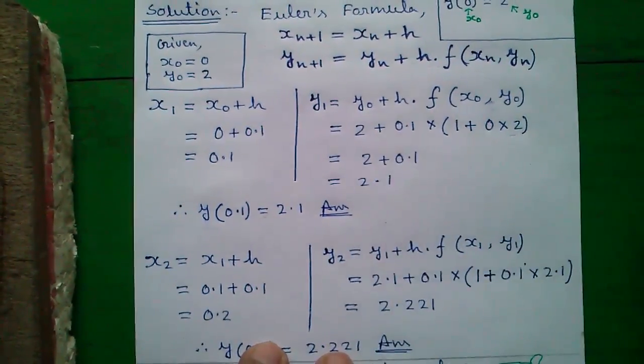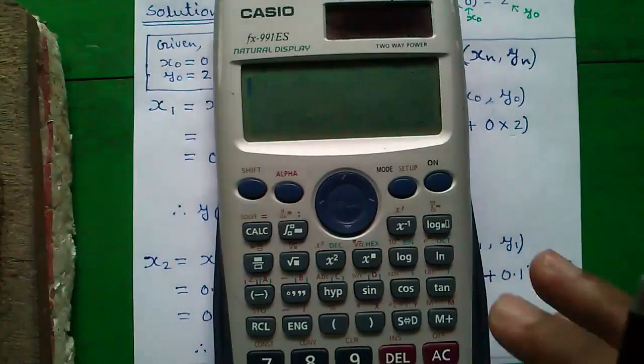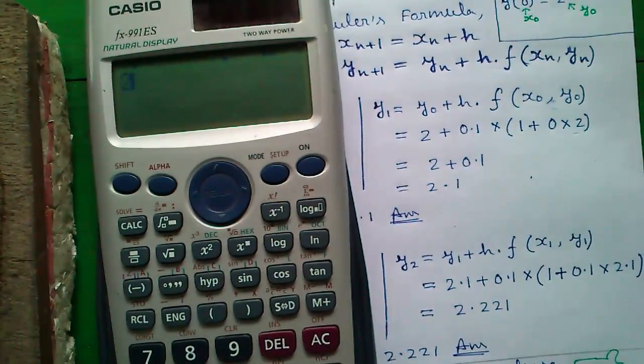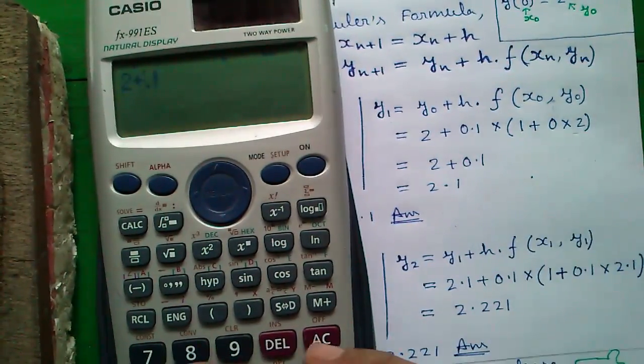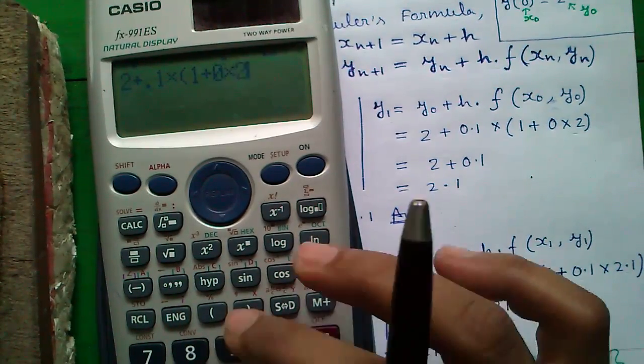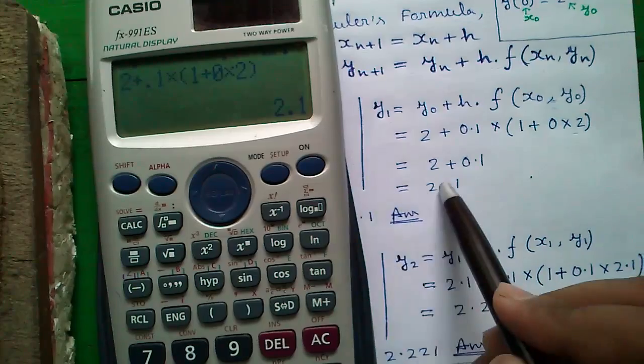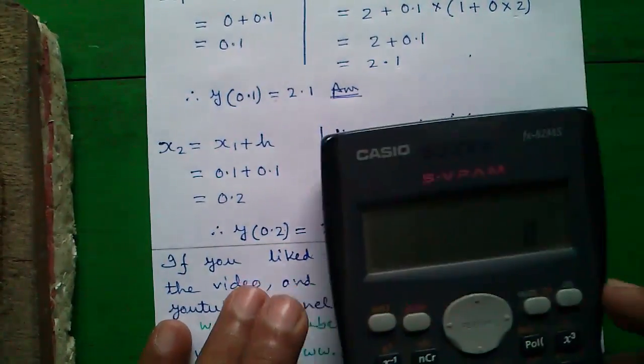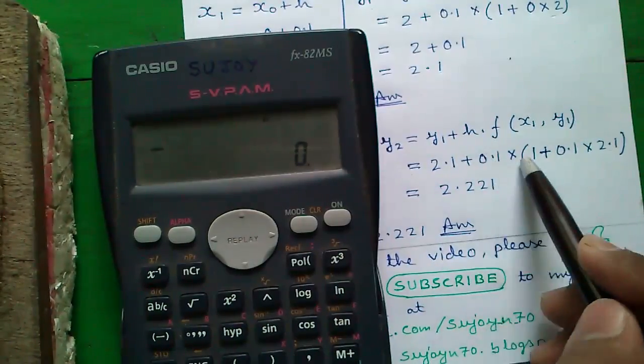You can easily do this math using your calculator. I will tell you how. Just enter the whole expression 2 plus 0.1 into 1 plus 0 into 2 and equals to that is 2.1. Similarly on this calculator you don't have to break it down.